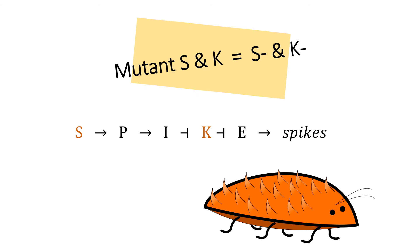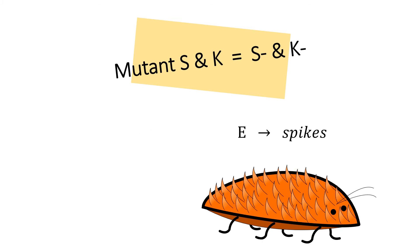If a cell has mutant S and K genes in its ectoderm cells, it would be very spiky indeed. The S product will not stimulate production of the P product, which will in turn not stimulate production of the I product. Normally this chain of events would end with the K gene product freely inhibiting the E gene from being transcribed. But this cell has a mutant K gene too. So a beetle with all mutant S and K genes in its ectoderm cells would be very spiky indeed.